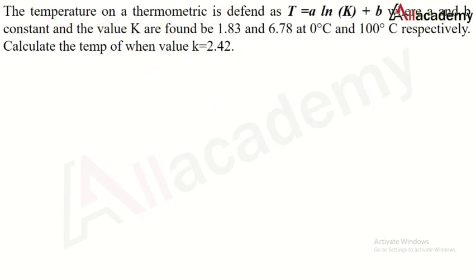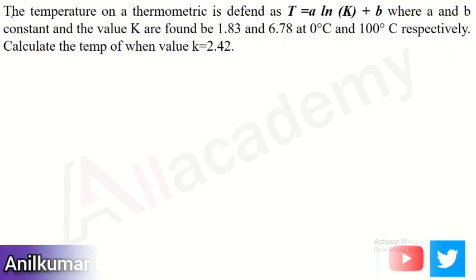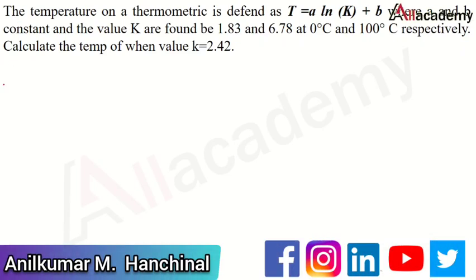The next numerical is from a previous university examination worth eight marks. The temperature on a thermometer is defined as t = a·ln(k) + b, where a and b are constants. The values of k are found to be 1.83 and 6.78 at 0°C and 100°C respectively. Calculate the temperature when k = 2.47.